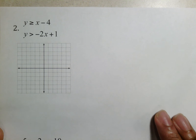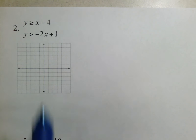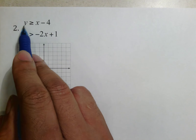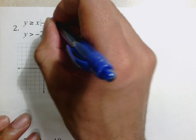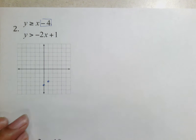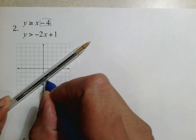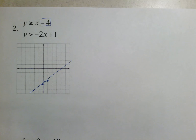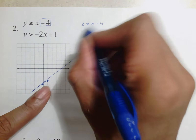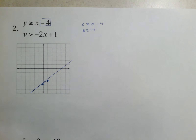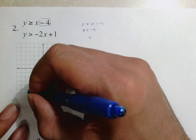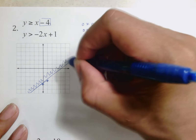Number two — take a moment to think about what you would do to graph this. Remember, whenever y is by itself this is the easy slope-intercept graph: the −4 tells me to go down four as my y-intercept, and the x coefficient tells me to go up one over one for slope. Because it has the equal-to portion under it, we draw a solid line. Testing (0, 0): 0 ≥ 0 − 4, which is 0 ≥ −4 — yes, that makes sense, so it's true and we shade towards (0, 0) using alligator teeth.